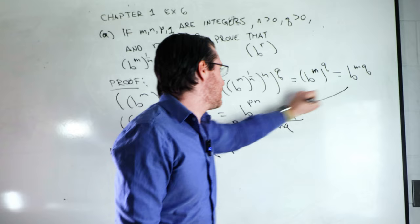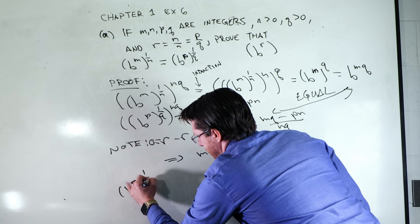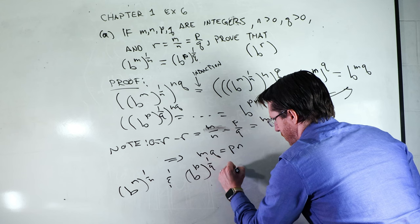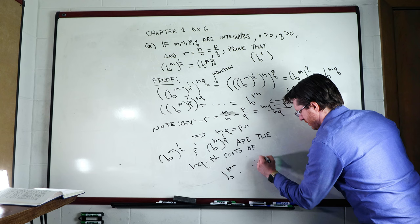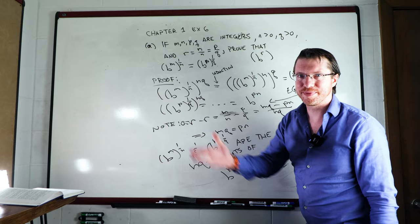And so that means that these two guys are equal. B to the M raised to the 1 over N and B to the P raised to the 1 over Q are the NQth roots of B to the PN. Therefore, they are the same. Positive real roots of positive real numbers are unique, right? So that's theorem 1.21.